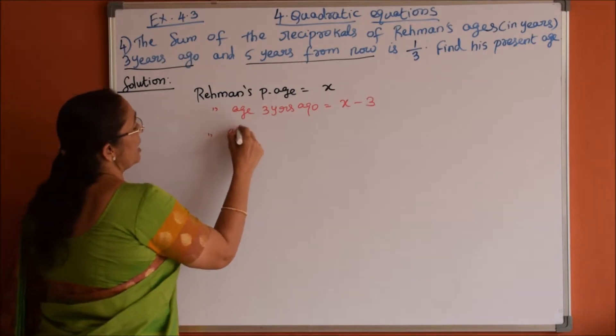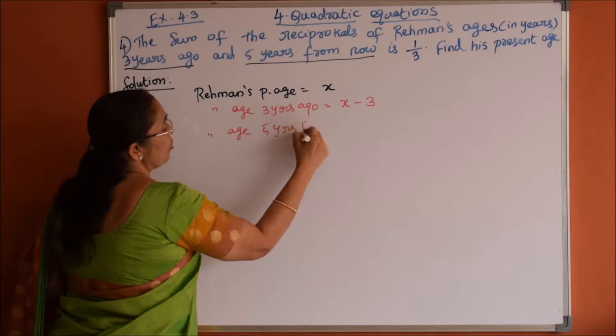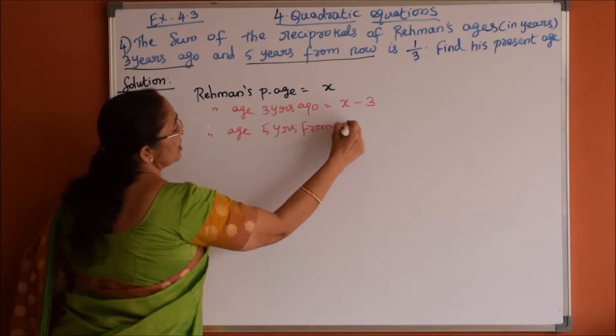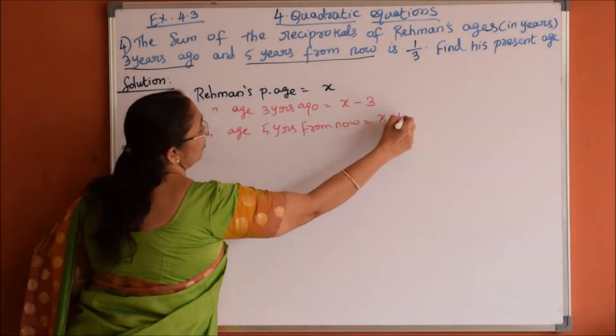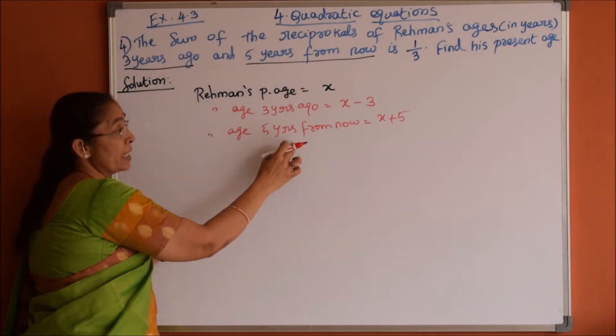Now Rahman's age 5 years from now, 5 years from now is nothing but x plus 5. So for these two statements we have written the mathematical statement.